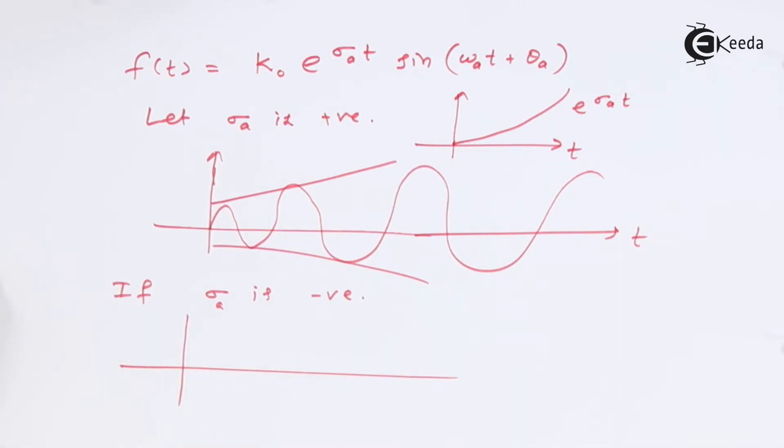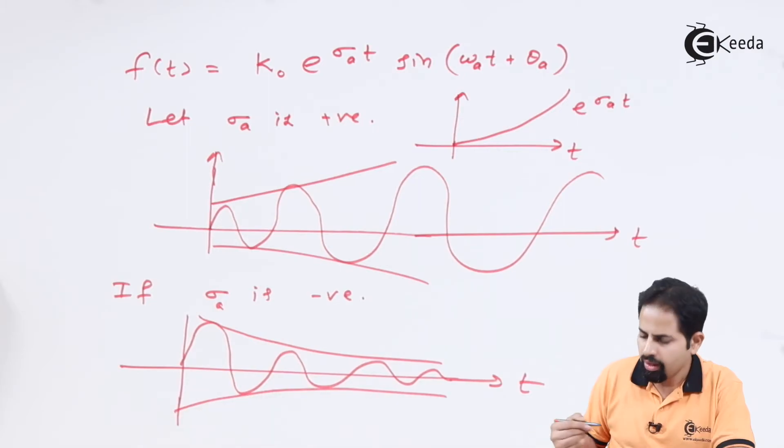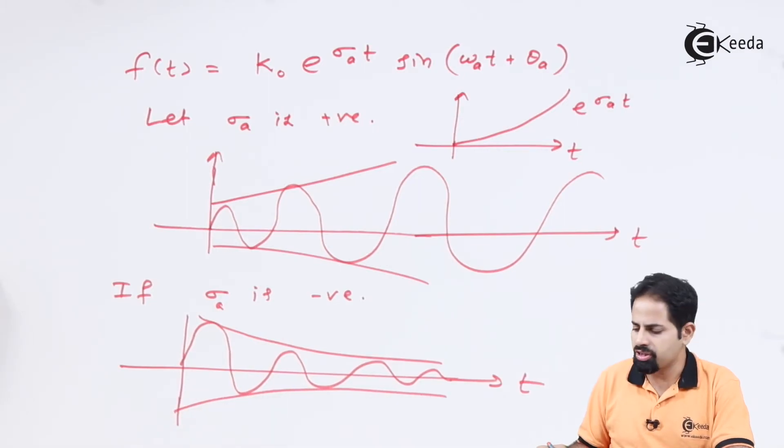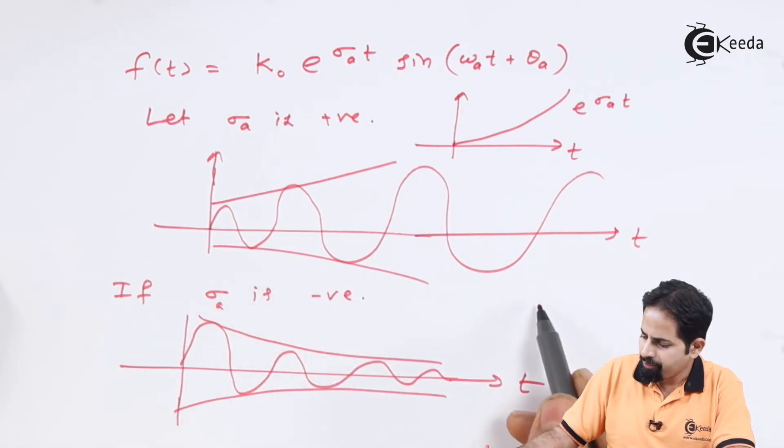So this sigma can be either zero or this sigma can be negative. If this sigma is negative, then our graph will be exactly reverse. This is how it is going to be, which is decaying exponential and which is realistic. So this sigma should be less than or equal to zero.